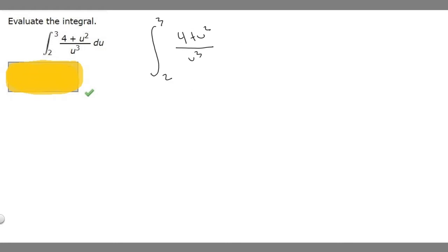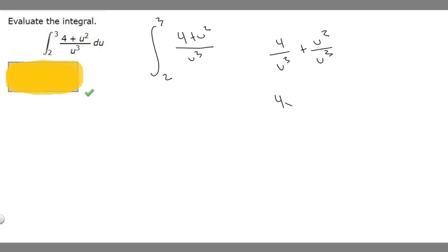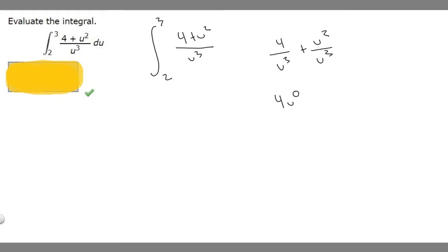What we're going to do is simplify this into a form that's easier to solve. We can rewrite this as (4 plus u squared) over u cubed. We can use u to the 0 since u to the 0 is the same thing as 1, so multiplying by 4 just gives us 4. Then we write u cubed on the bottom.